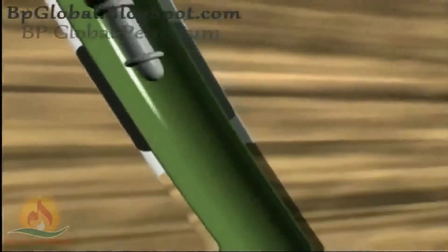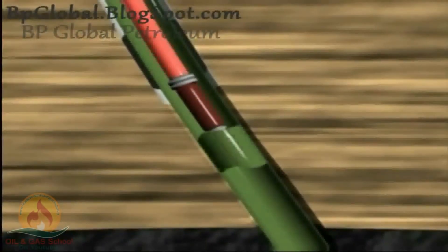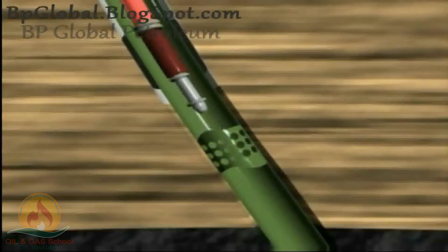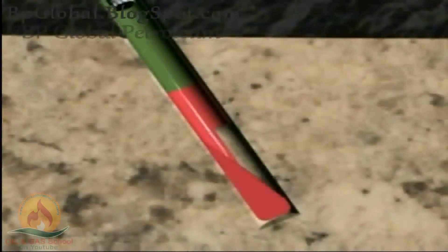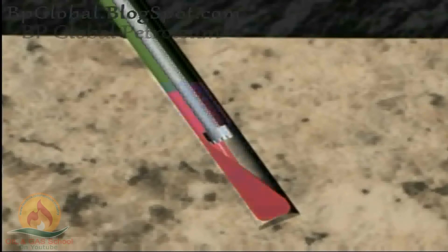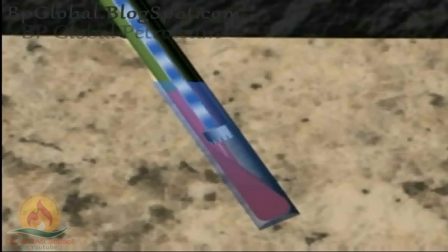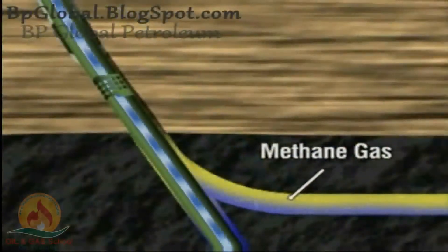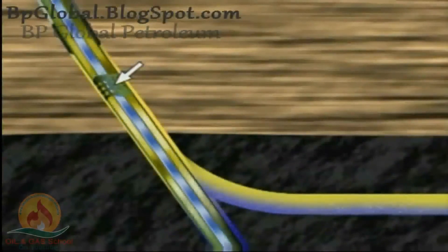A perforating gun is then lowered on wireline into the carrier string to a point just below the 9 and 5/8-inch casing shoe. The gun is activated to perforate the 7-inch casing, then retrieved from the carrier string. An electric submersible pump (ESP) is now lowered into the carrier string on tubing, spaced near the bottom of the sump, and secured and sealed on the surface. The water is pumped to surface inside the tubing. After the coal seam begins to dewater, methane gas is released. The gas migrates up and enters the 7-inch casing through the perforations and is pumped to surface by compression.